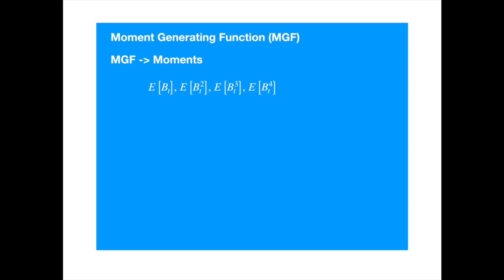We will then deduce a general formula for the kth moment. We will also outline an alternative method for deriving a recursive formula for the moments of the Brownian motion. This formula will enable us to enumerate the moments quickly, helping us to verify the general formula.